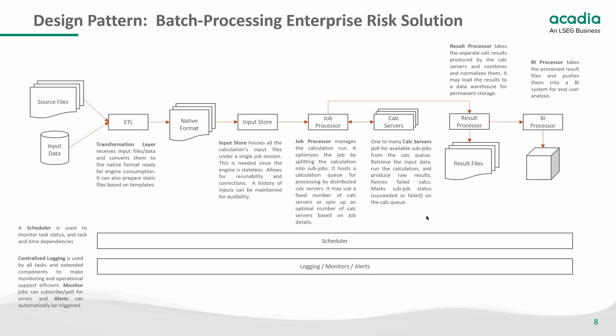Here we have our calculation grid, which in this design is a cluster of identical calc servers. These servers pull for available sub-jobs from the calc queue, retrieve input data, and run the calculation. Raw results are stored locally and failed calcs are retried. Sub-job status is updated on the calc queue. Once completed, servers continue pulling and running sub-jobs until none are left. Then the job processor considers the calculation complete and moves on. A result processor is a post-processing step that takes all the separate raw results from the calc servers and combines them, loading results into a data warehouse or keeping them in a file format.